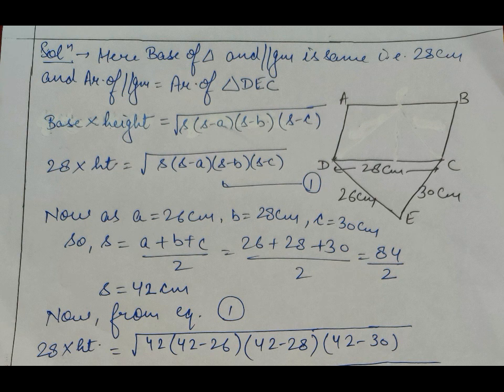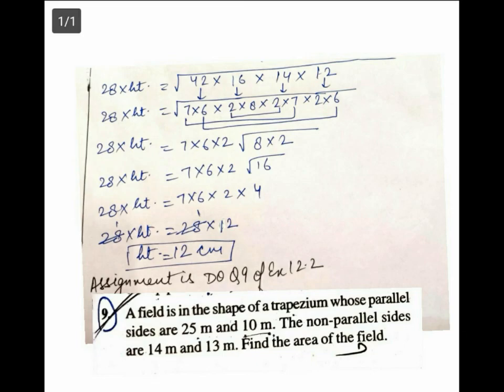Continuing: 28 × height = √(42 × 16 × 14 × 12). Splitting the factors: 42 = 7×6, 16 = 2×2×4 (written as 2×2×8 then paired), 14 = 2×7, 12 = 2×6. After making pairs, we get 28 × height = 7 × 6 × 2 × 4. Solving further, height = 12 centimeters.